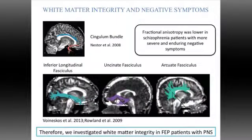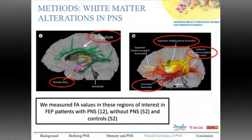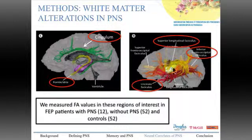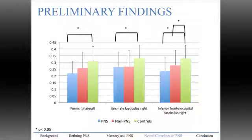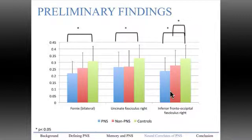Our next objective was to investigate white matter integrity in first episode patients with PNS. We used a region of interest approach focusing on five areas: the cingulum, the fornix, the superior longitudinal fasciculus, the uncinate fasciculus, and the inferior frontal occipital fasciculus. We measured fractional anisotropy values and compared them across three groups. We found reduced FA values in the PNS group in the fornix and the uncinate fasciculus in the right hemisphere compared to controls. Both patient groups had lower FA values in the inferior frontal occipital fasciculus, also in the right hemisphere.